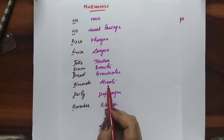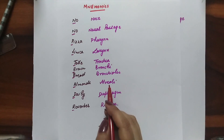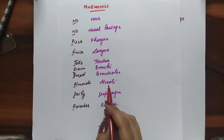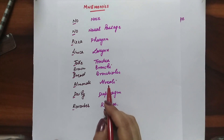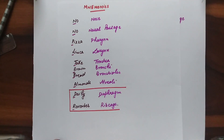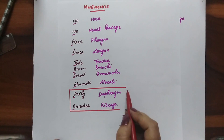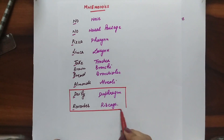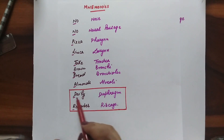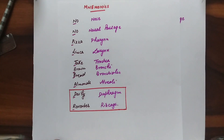The breathing process involves the exchange of gases, and the air will enter the air sacs. The last two — diaphragm and ribcage — are helping in the movement of the lungs. So D for diaphragm and R for ribcage.